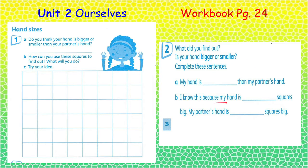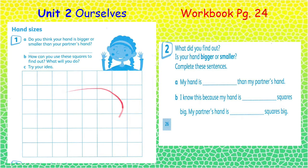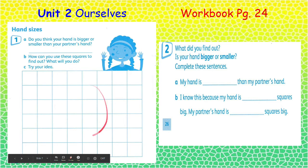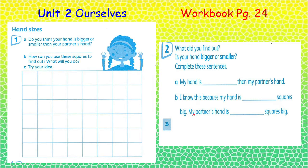I know this because my hand is — then count how many squares. After you draw your hand on these squares, count all the squares and write it here. Then you compare your hand with your partner. My partner's hand is how many squares bigger? Count how many squares and write it also on this line.